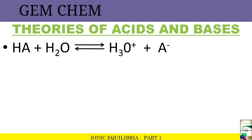Now we will look at the theories of acids and bases. Here we will learn about the acid dissociation constant and the base dissociation constant. According to the Bronsted-Lowry concept, an acid is one which can donate a proton and a base is one that can accept a proton.